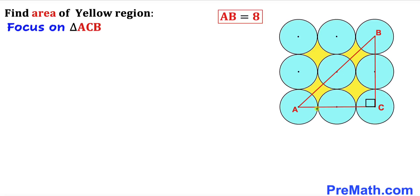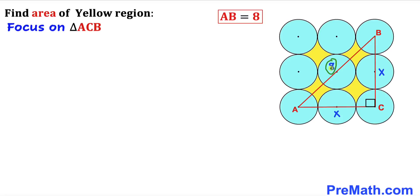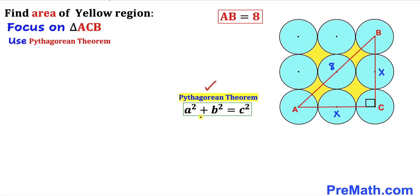Now let's make an observation. We can see that triangle ACB is an isosceles triangle, since side length AC equals side length BC. Let me call this side length x, so this side length is x as well. We also know that AB length is 8. We are going to use the Pythagorean theorem: a squared plus b squared equals c squared.